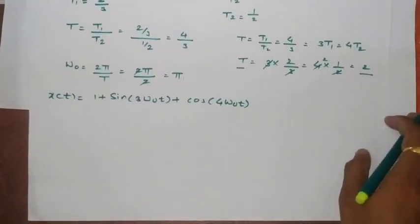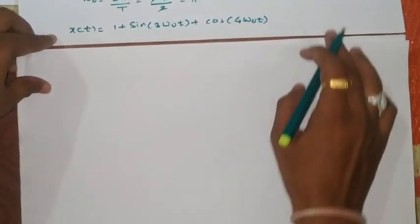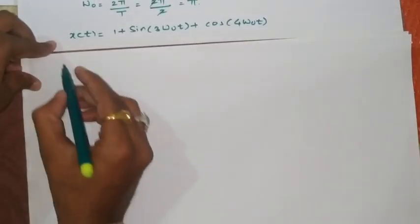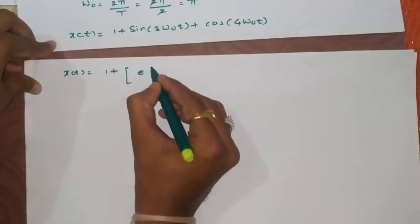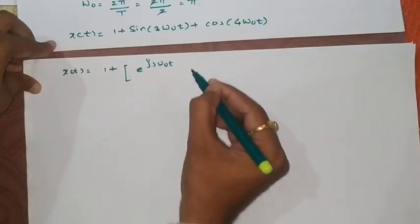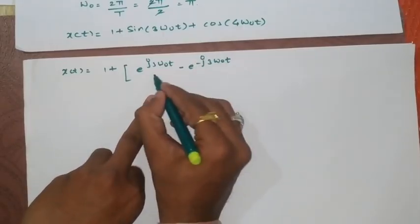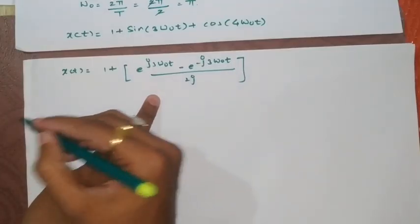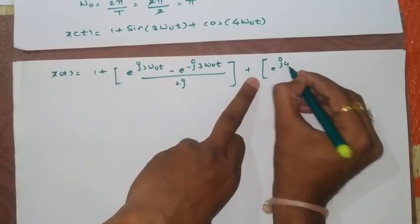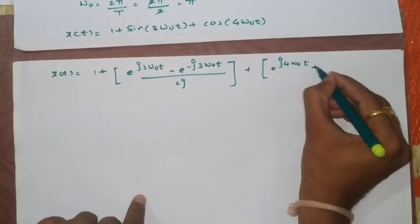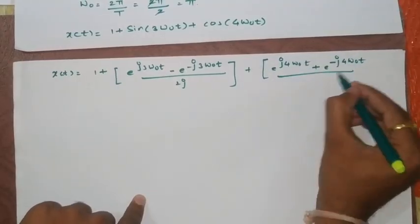Now we got this term in terms of ω0. Now we will proceed in the same way as we did in earlier example. I am trying to represent this in entire terms in the form of exponential as 1 plus e raised to j3ω0t minus e raised to minus j3ω0t upon 2j plus cos e raised to j4ω0t plus e raised to minus j4ω0t divided by 2.